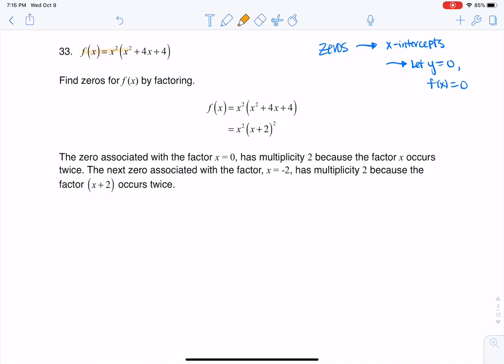So if we take a look, here's our function. The first thing I want to do is I'm going to set that equal to zero. So let me start writing that over here. I have x squared times x squared plus 4x plus 4, and I would like to set that equal to zero.